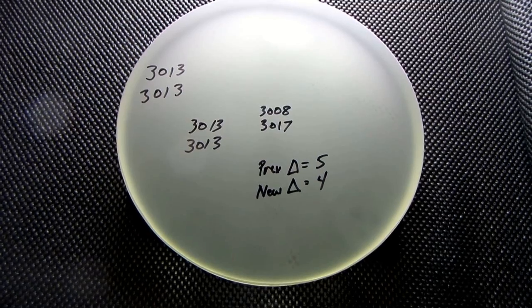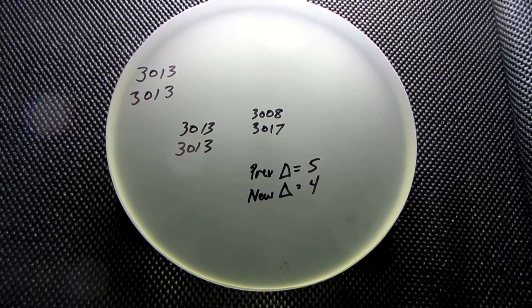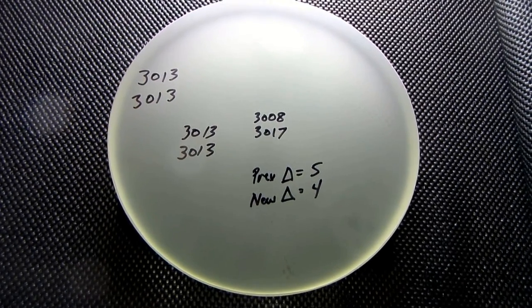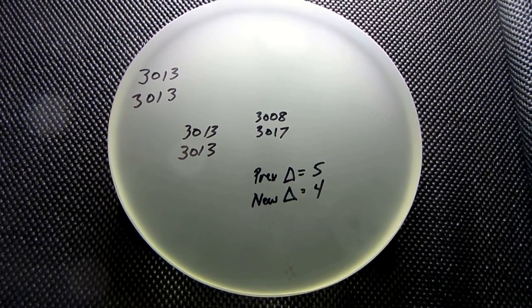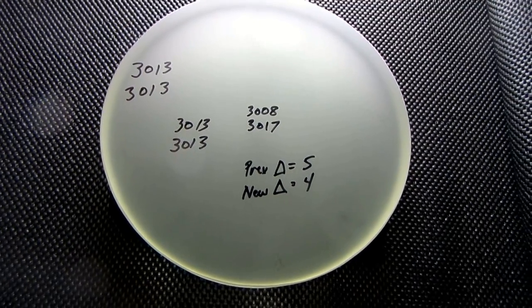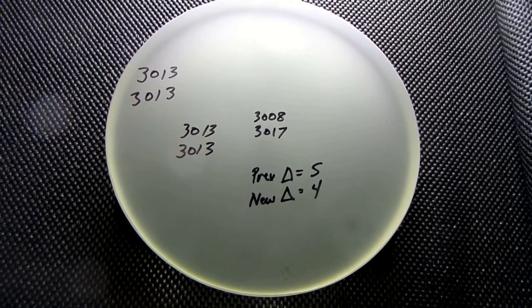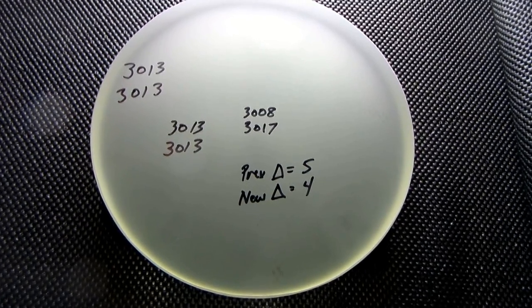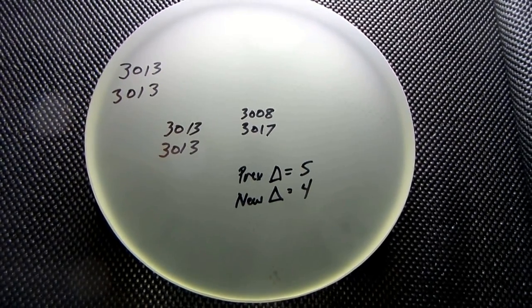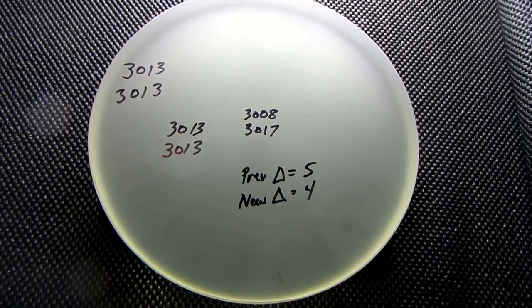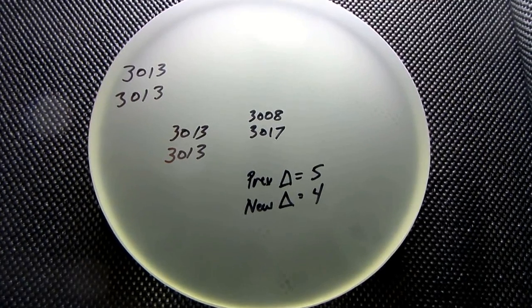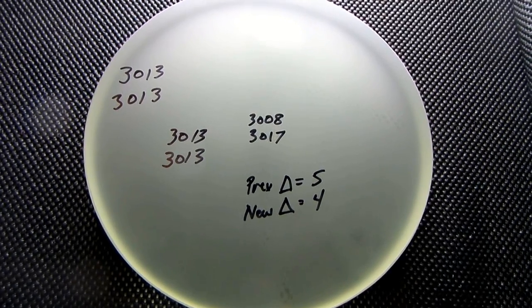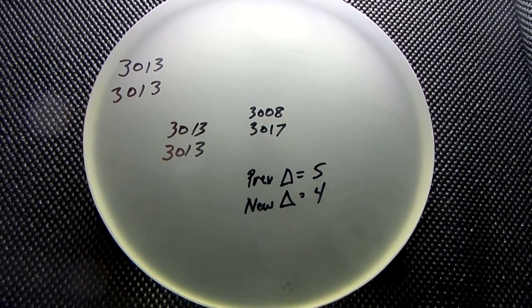After the 12 micron session, you can see the outer part of the mirror didn't change—it stayed at 3013. The 50% zone didn't change, and the center zone went from 3008 to 3017. So we did spherize the mirror a little more. The previous delta was 5 and we reduced it to 4, so the readings are just slightly closer together. I'm going to go ahead and move on to the 9 micron.